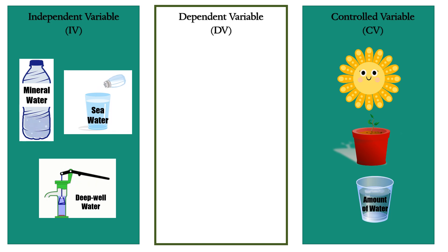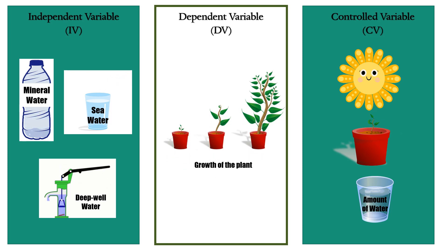Lastly, what is the dependent variable? If we may recall, dependent variable is the one being measured in the experiment. Whatever happens to independent variable during the experiment is the dependent variable. Remember what happened to the plants after three weeks? Very good! They grow at a certain height. So, our dependent variable is the growth of the plant.